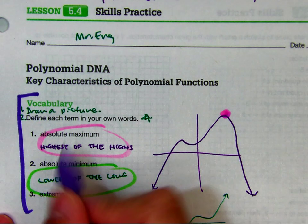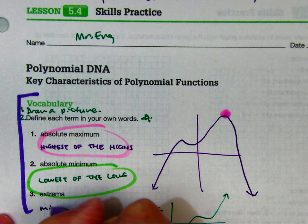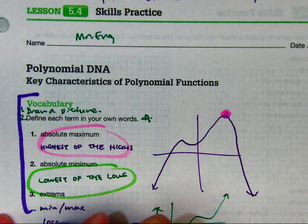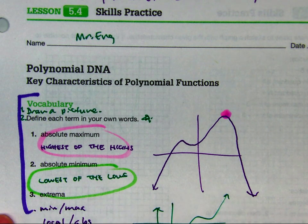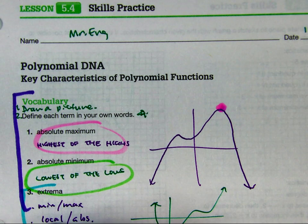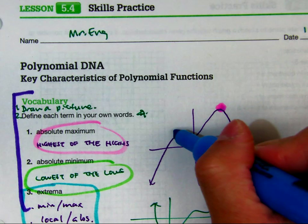And then an extrema is just a min or a max, and those are both local and absolute. So an example of those would be all of these points, right?